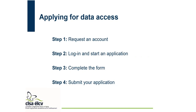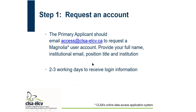I'll go over step one. First, request an account. The primary applicant should email the access email to request a Magnolia user account, providing their full name, institutional email, position title, and institution.